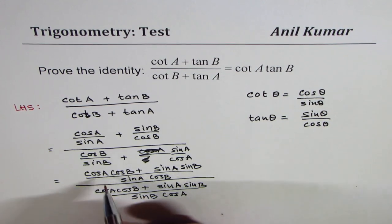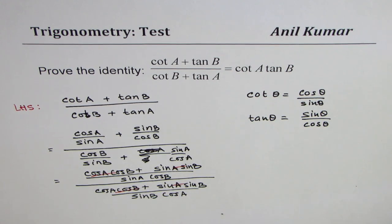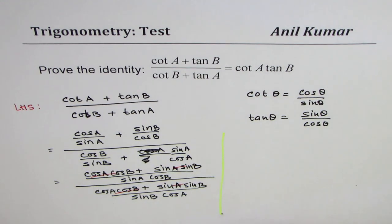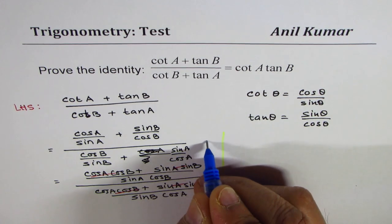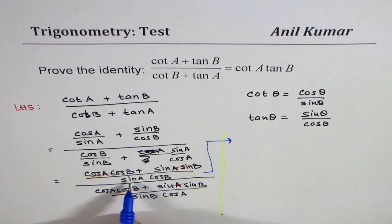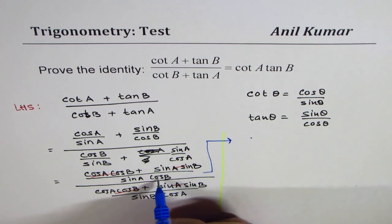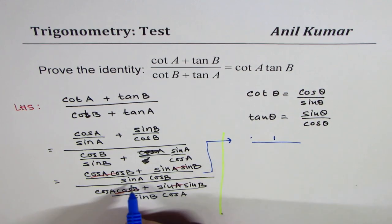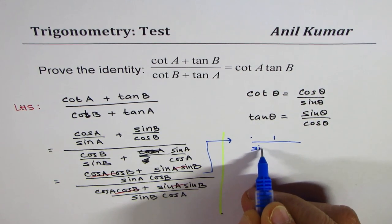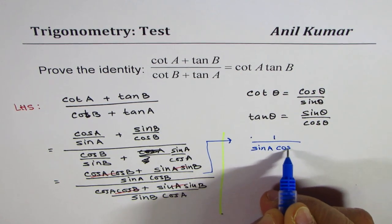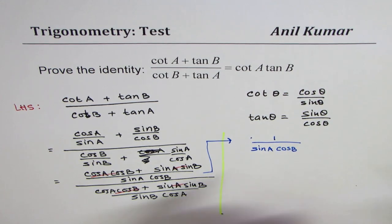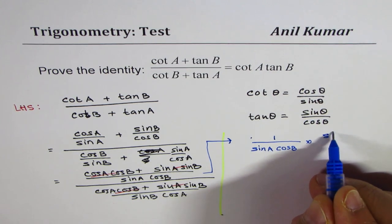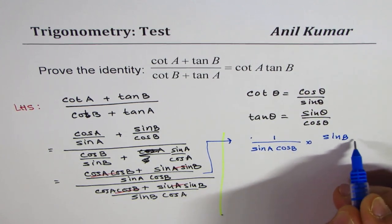At this stage you can see that the numerators of both the numerator and denominator cancel out. So we get 1 over sin A cos B, divided by 1 over sin B cos A. When you divide, it flips, so it becomes multiplied by sin B cos A.